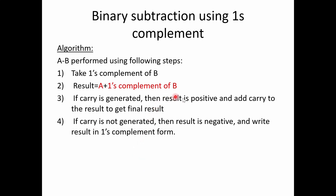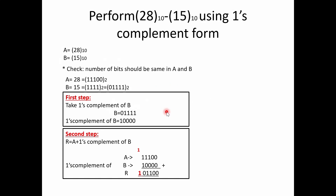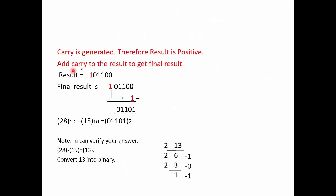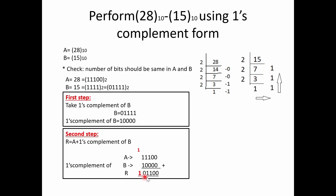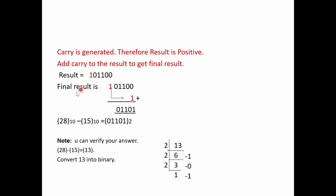Since carry is generated, the result is positive. We add the carry to the LSB of the result 101100, giving 0 plus 1 is 1, then 0, 1, 1, 0. So 28 minus 15 gives 01101. We can verify by converting: 28 minus 15 is 13 in decimal, and 13 in binary is 1101. The answers match, so the answer is correct.